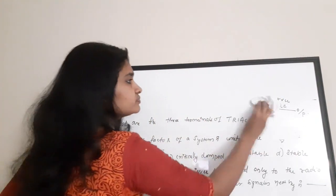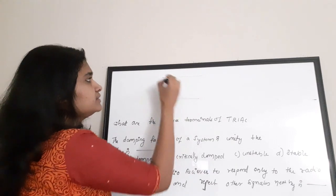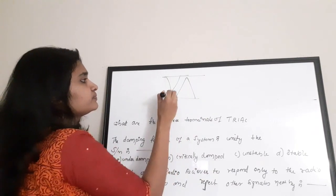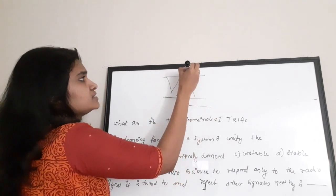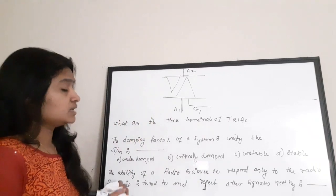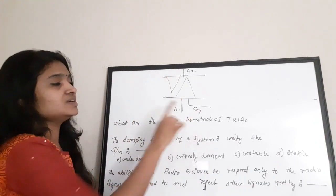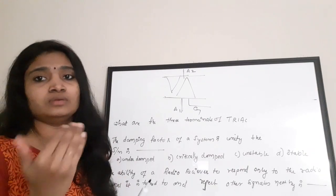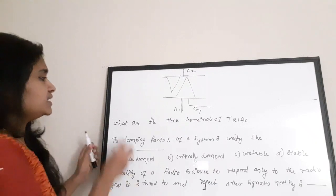Next question: what are the three terminals of a TRIAC? Drawing it — the TRIAC has terminals A2 (anode 2), A1 (anode 1), and G (gate). So the terminals are: anode 1, anode 2, and gate. There are two anodes and one gate — that is the structure of a TRIAC.